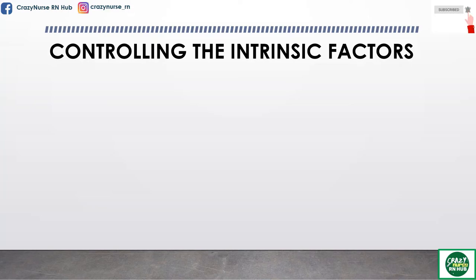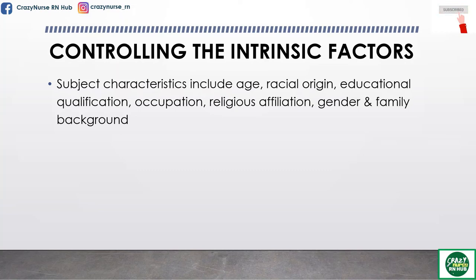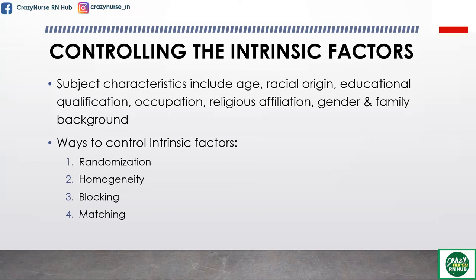Now let's have controlling the intrinsic factors. Researchers describe ways of controlling extraneous variables associated with subject characteristics such as age, racial origin, educational qualifications, occupation, religious affiliation, gender, and family background. Here are the ways to control intrinsic factors.